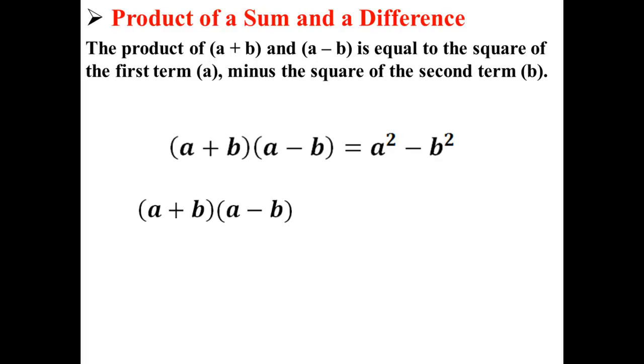Now let's work this out to see if this is actually true. We take (a + b)(a - b) and we FOIL it out. So now we have (a)(a) + (a)(-b) + (b)(a) + (b)(-b).